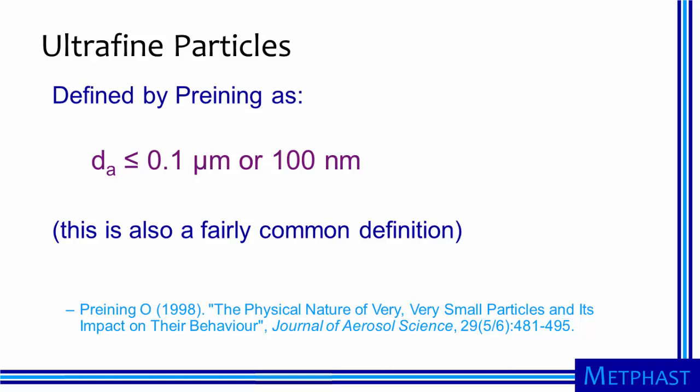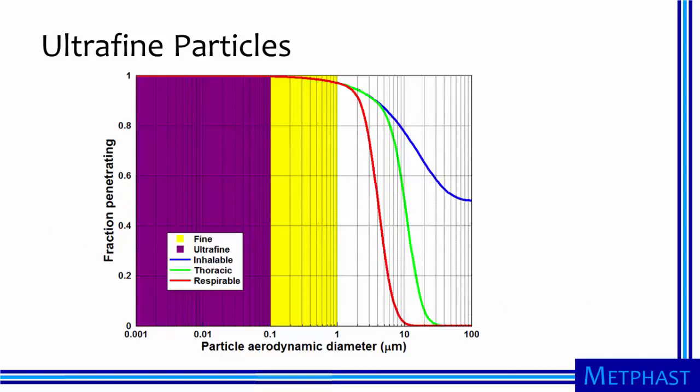Pryning defined ultrafine particles as those smaller than 0.1 micrometer or 100 nanometers in aerodynamic diameter — also a fairly common definition. When we include the ultrafine definition in purple on the same graph as the fine particle and sampling criteria definitions, we see that we are now talking about stuff, using Smalley's word, that is within 2 orders of magnitude of the nanometer scale. We've talked about a bunch of different size-based definitions of particles, so where do nanoparticles fit in?